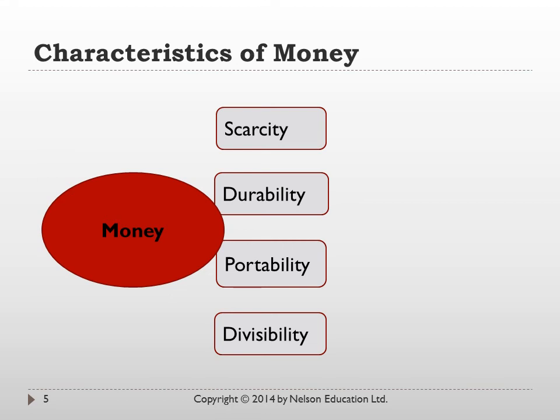Second, money must be durable. Using a perishable item such as an apple or vegetables as a form of money really wouldn't work very well because over time it would perish and become useless. Typically, even early societies used things that were more durable — metals and even some paper money in the form of playing cards.